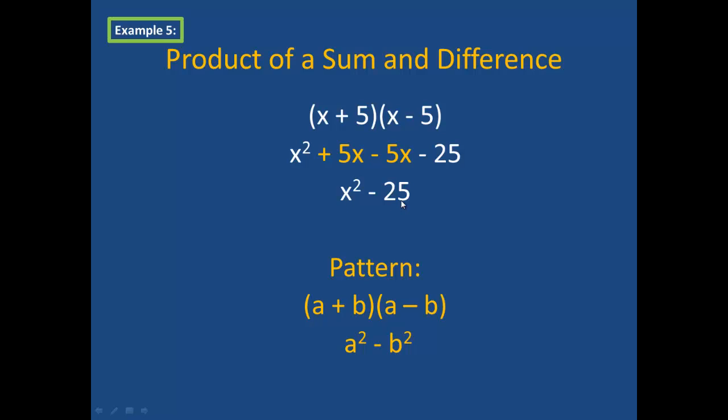If you did several of these special product of a sum and difference problems, you would notice a pattern for this as well. The middle terms will always cancel. So anytime I have the pattern a plus b times a minus b, I can jump straight to the solution if I recall that the final product will be the first term squared minus the second term squared. Please include this as example 5 in your notes.